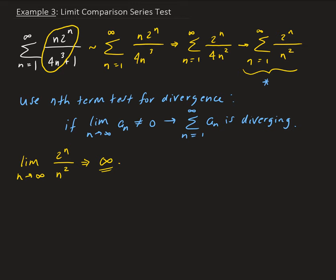So therefore, because the limit of the nth term is approaching infinity as n approaches infinity, therefore we can conclude that the series that resembles the one that we're given is diverging.